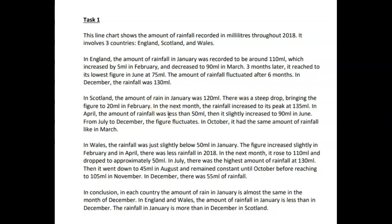In Scotland, the amount of rain in January was 120 ml. There was a steep drop, bringing the figure to 20 ml in February. In the next month, the rain increased to its peak at 135 ml. In April, the amount of rainfall was less than 50 ml. Then it slightly increased to 90 ml in June. From July to December, the figure fluctuated.